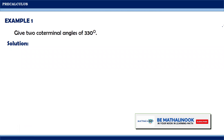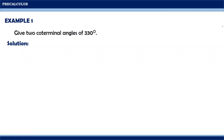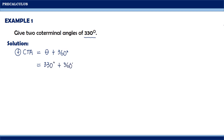Give two coterminal angles of 330 degrees. To find a coterminal angle, we simply add or subtract 360 degrees to or from the given angle. If we want to find the positive coterminal angle, we simply need to add 360 degrees to the given angle. Since the given angle is equal to 330 degrees, a positive coterminal angle is equal to 330 degrees plus 360 degrees, which is equal to 690 degrees.